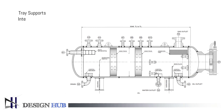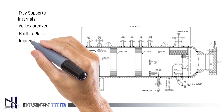Internal elements of the pressure vessel are: tray supports, vortex breaker, baffle plate, and impingement plate.